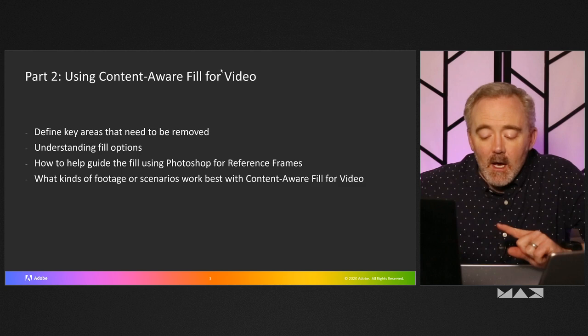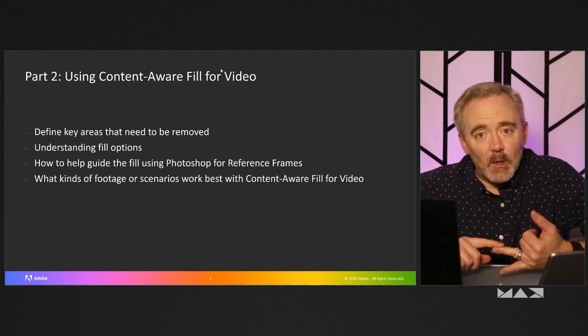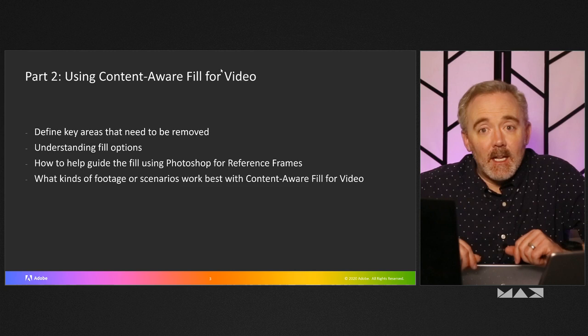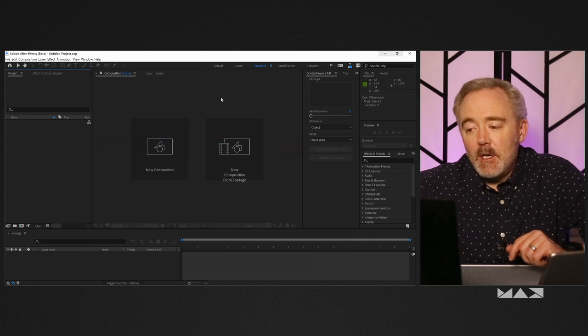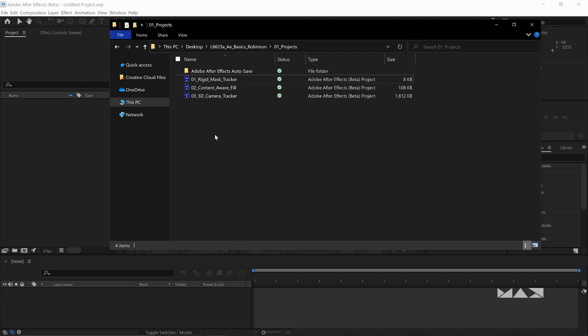Before we launch After Effects, I just want to remind you this course was designed for you to watch the video first and download the exercise files and the workbook, so you can watch it again to actually follow along. Or you can use the workbook and utilize the same steps that I've done here. Let's hop out of PowerPoint and jump into After Effects. I'm going to navigate to my exercise files, which I saved to my desktop. In that folder, I have my 01 projects folder, and I want to open the 02 content aware fill project.